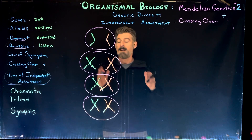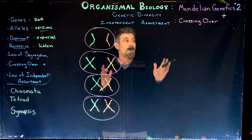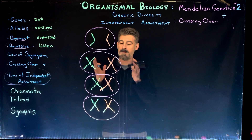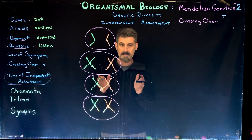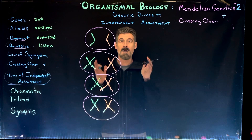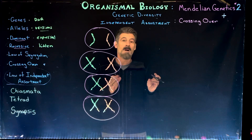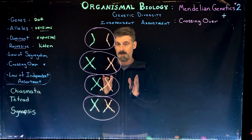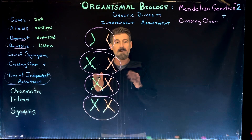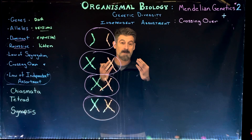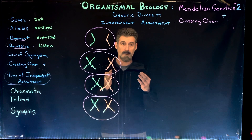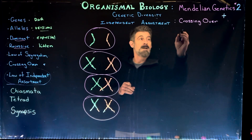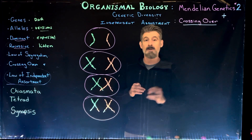To continue looking at independent assortment and meiosis, we want to look at the next step. The last example I used to look at independent assortment had different genes on different chromosomes. Now we're going to look at something that makes meiosis incredibly important — and it's also necessary for meiosis to even occur. It's a process referred to as crossing over.